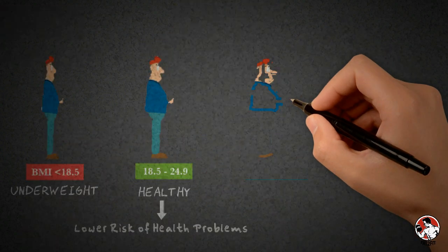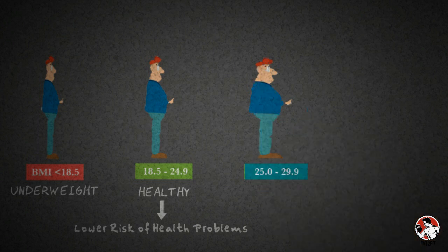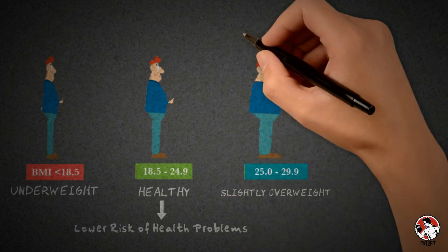A BMI between 25 to 29.9 indicates that you are slightly overweight and you should lose some weight to be fit.